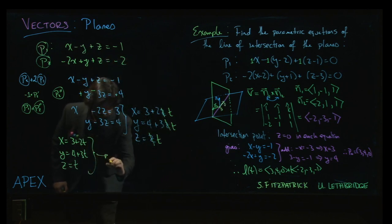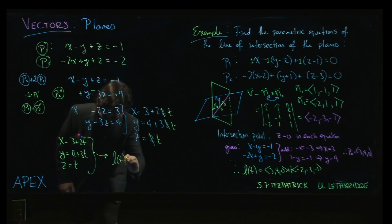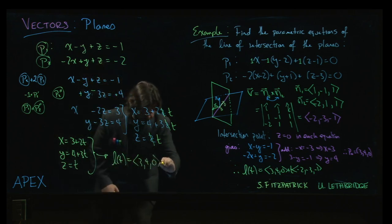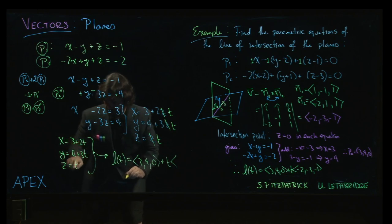If we wanted to put this into vector form, we could do that. Now, l of t will be—what's our initial point? 3, 4, and 0. And then t times 2, 3, 1.